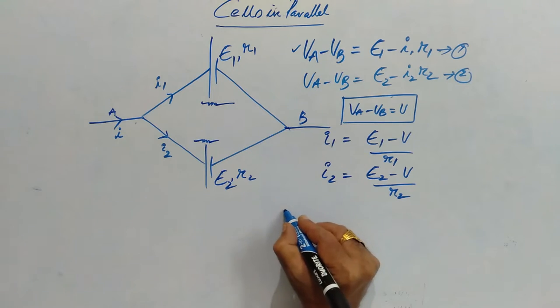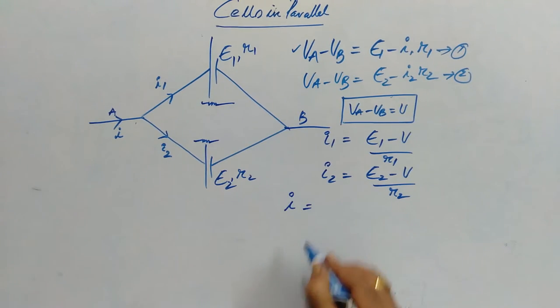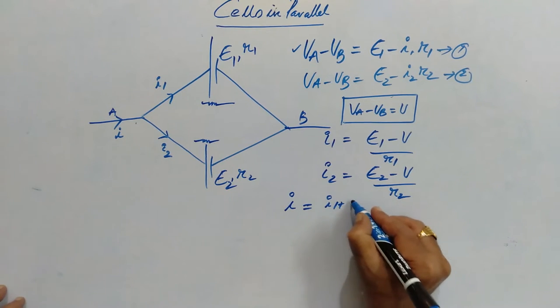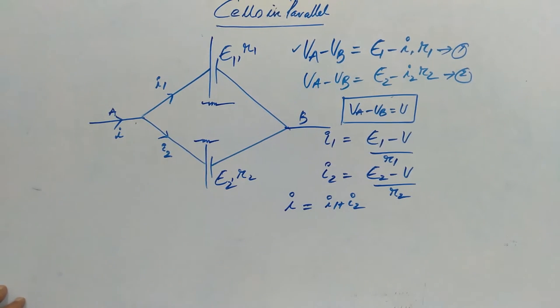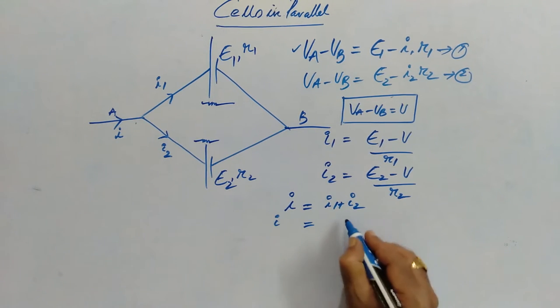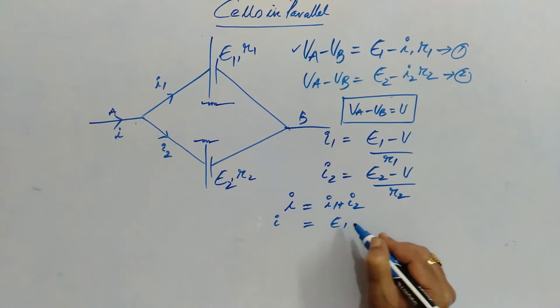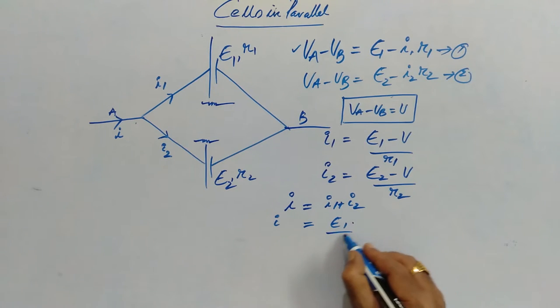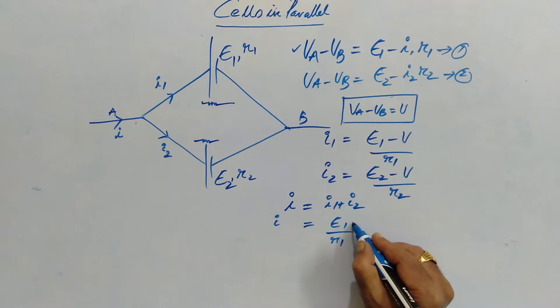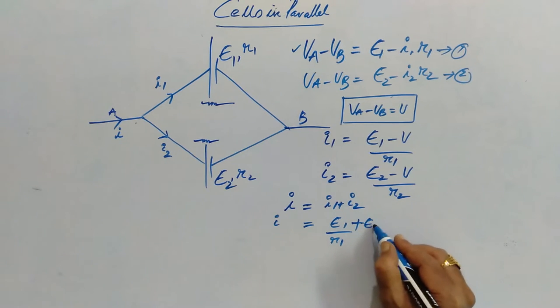We know that I is divided into I1 and I2. Therefore, sum of I1 plus I2 must be equal to I. Therefore,